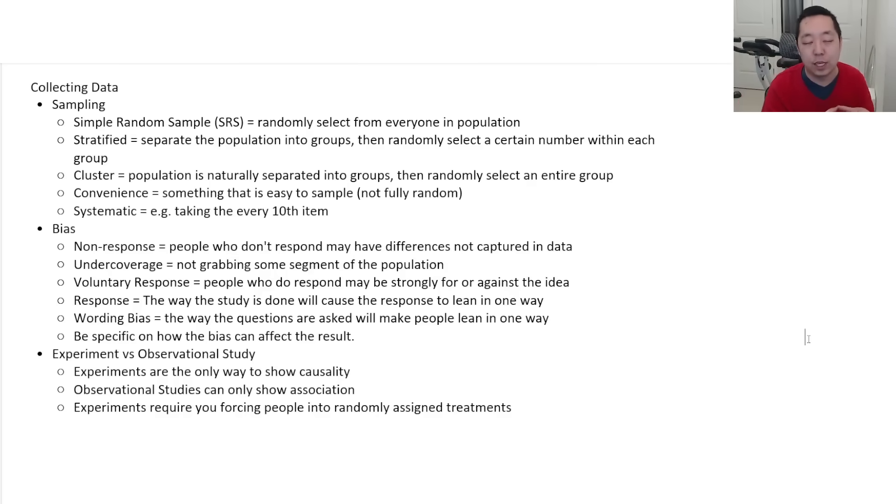For example, in clustering, if you're going to sample at your school, you may randomly pick a classroom and then sample everyone in that classroom. As opposed to stratifying, which you would be grouping maybe by 9th, 10th, 11th, and 12th graders and randomly selecting from within that group. That's the difference between stratified and clustered.